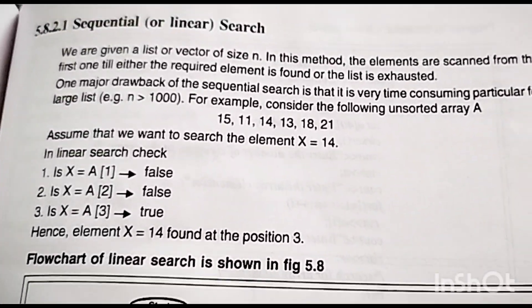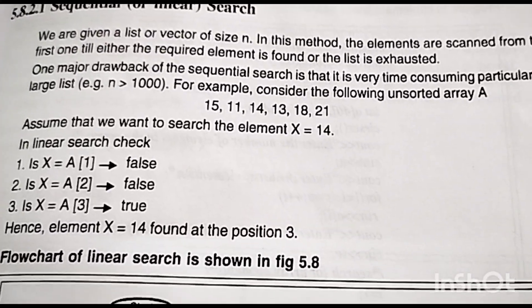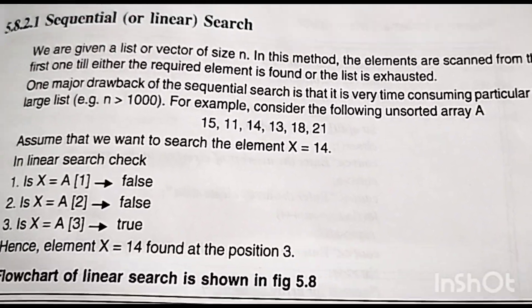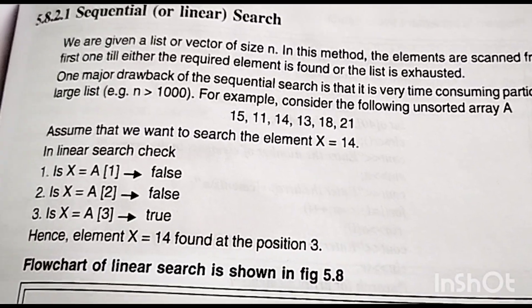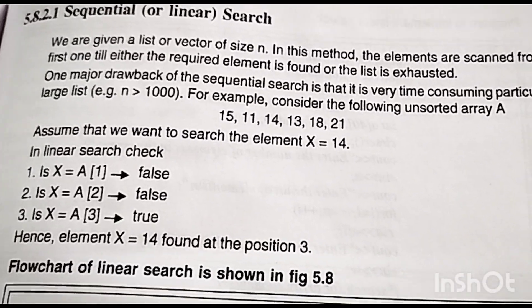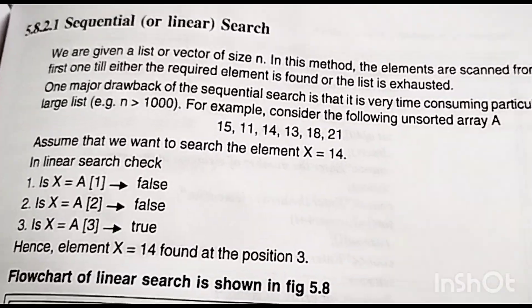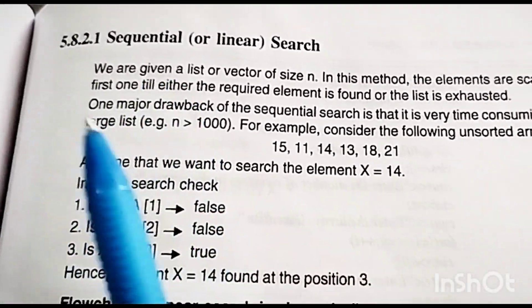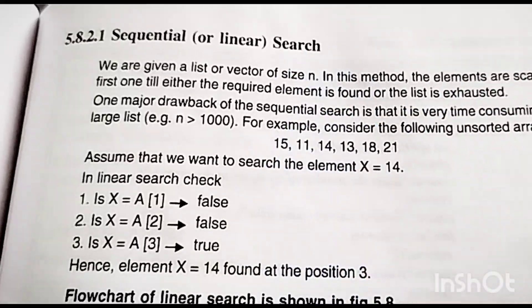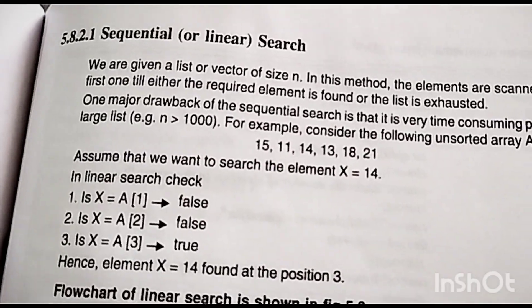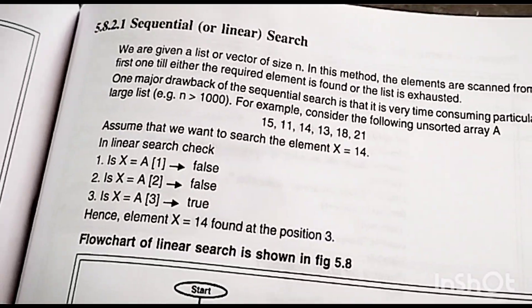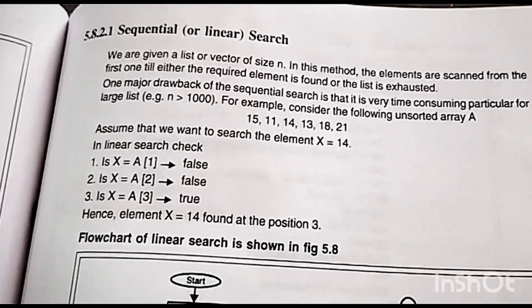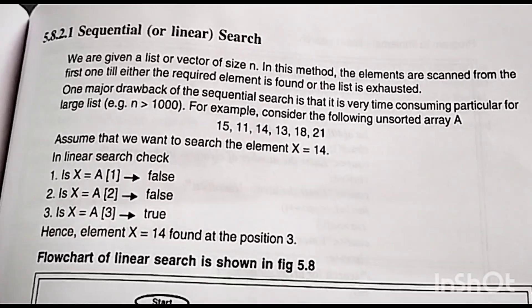Searching means that we will find an element in a list. If it is found, we tell in which position. If it is not found, we display a message. We can do two types of searching: sequential search and binary search. Sequential search is less preferred because the compiler takes a lot of time, whereas binary search is faster and easier.